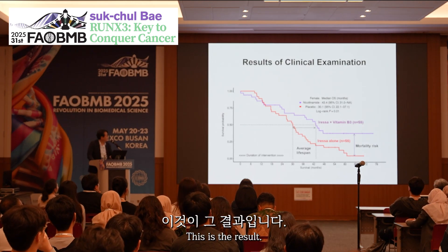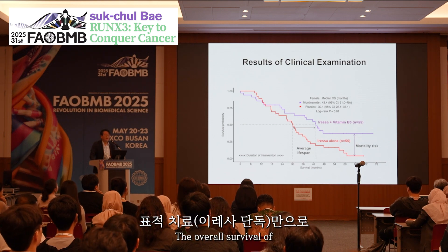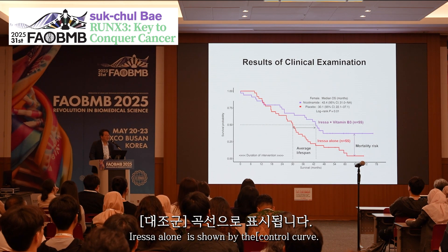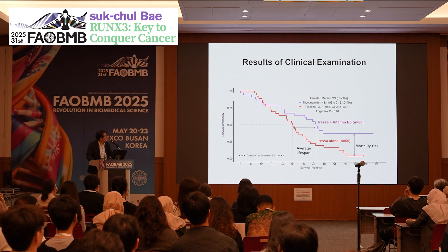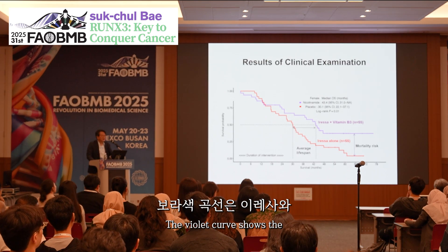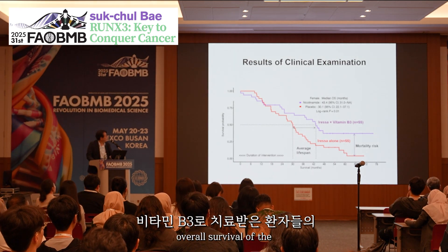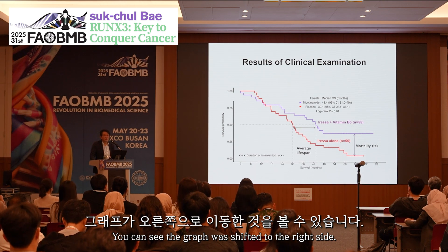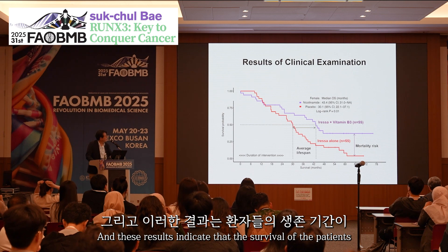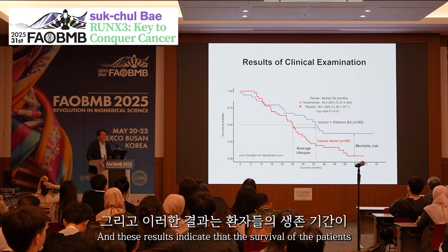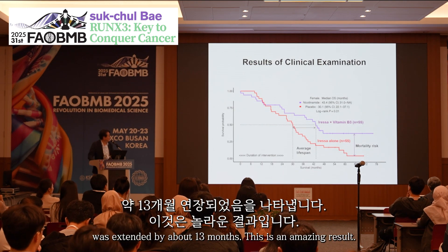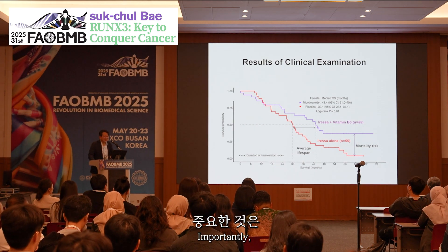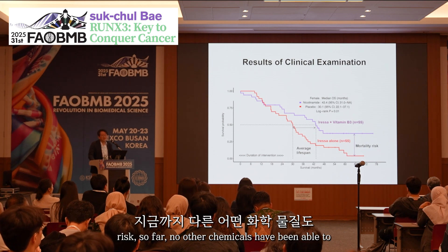The red curve shows the overall survival of patients treated only with targeted therapy — the EGFR inhibitor alone. The violet curve shows the overall survival of patients treated with the EGFR inhibitor and Vitamin B3. You can see the graph was shifted to the right side, indicating that the survival of the patients was extended.